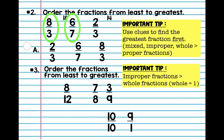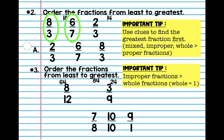Now we have three more fractions: eight twelfths, seven eighths, and three ninths. Seven eighths is closest to its denominator, so it might be the biggest. Eight times eight is 64 and twelve times seven is 84 — so seven eighths is bigger than eight twelfths. Then nine times seven is 63 and eight times three is 24, so seven eighths is our winner. For the last two: nine times eight is 72 and twelve times three is 36, so eight twelfths is next, and three ninths is last.